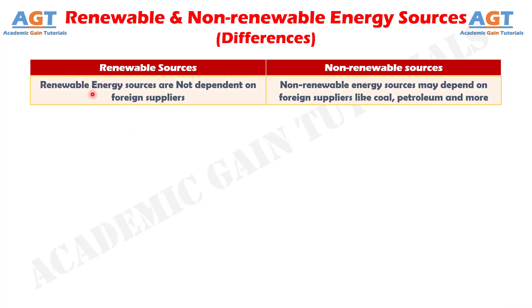Number 7: Renewable energy sources are not dependent on foreign suppliers, but non-renewable energy sources may depend on foreign suppliers, like coal, petroleum, and more.